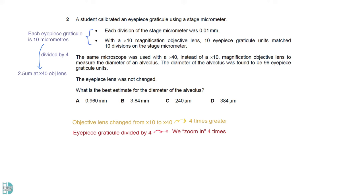So at times 40, each eyepiece unit is 2.5 micrometer. If an alveolus is 96 units, its diameter is 240 micrometers in total.